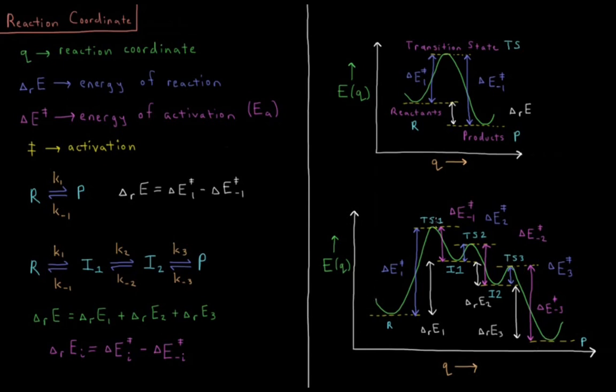We have delta E of activation 1 going from R to TS1, delta E of activation 2 going from I1 to TS2, delta E of activation 3 going from I2 to TS3. And similarly for the reverse direction, we have delta E of activation minus 1 from intermediate 1 to TS1, delta E of activation minus 2 from I2 to TS2, and delta E of activation minus 3 from our products up to transition state 3.